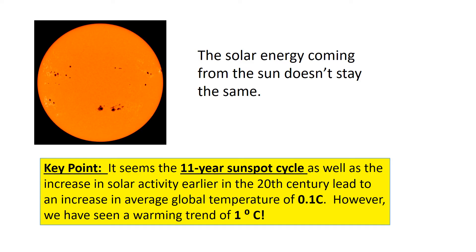Another natural cause is that the energy from the Sun doesn't stay the same. The Sun produces sunspots, which are a sign it is giving off more bursts of radiation, and those bursts of radiation contain energy that can cause the Earth to warm up. However, the impact of this is only about 0.1 degrees Celsius, so it certainly doesn't explain the huge temperature changes seen over the Quaternary. Overall, Milankovic cycles seem to be the biggest natural factor affecting our climate over the Quaternary period.